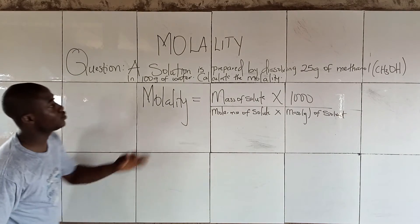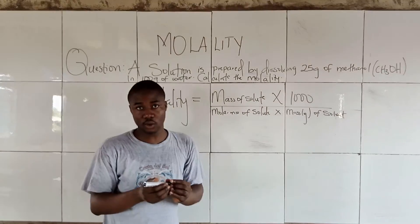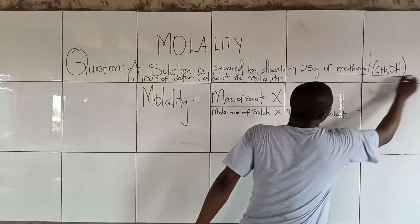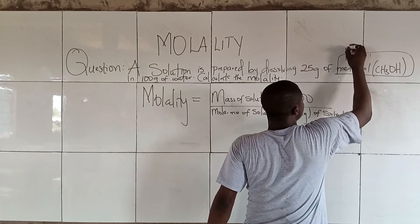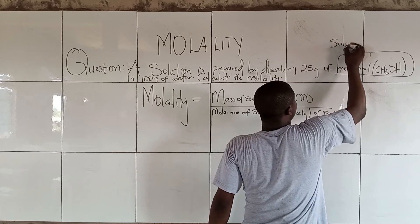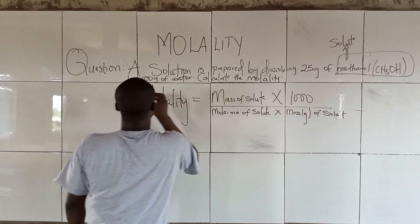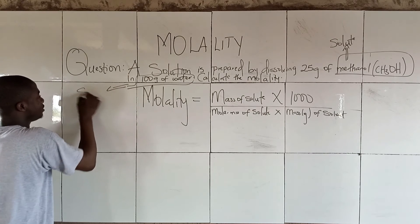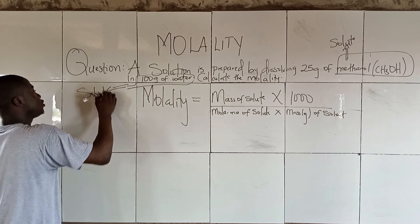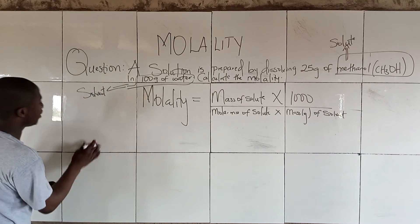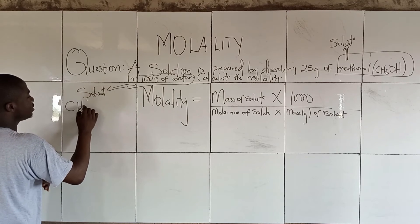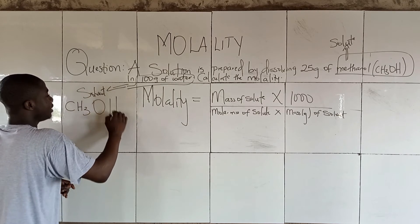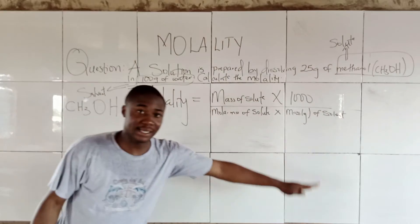Now, looking at these two compounds given in the question, methanol is dissolved and water is the solvent. So let's input our parameters. Before we get into that, let's calculate the molar mass of methanol.